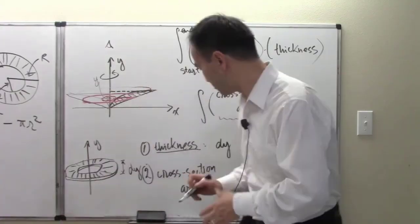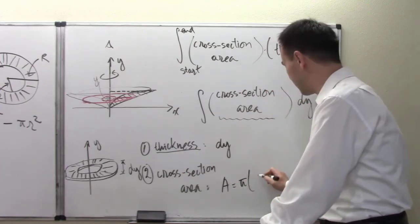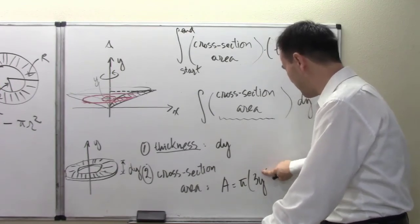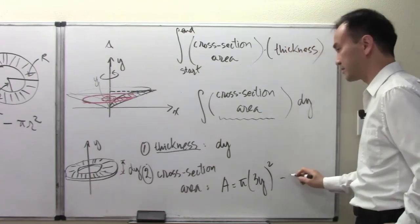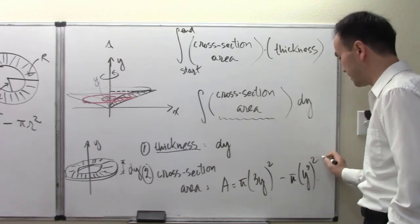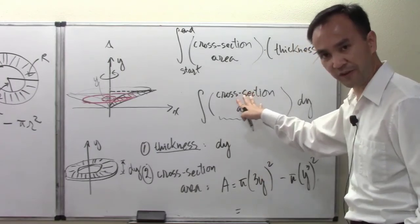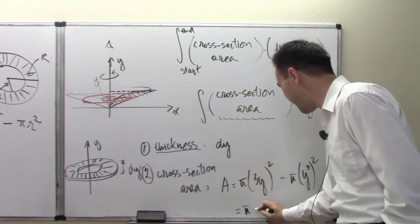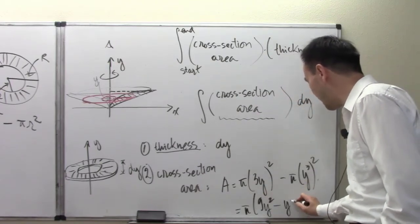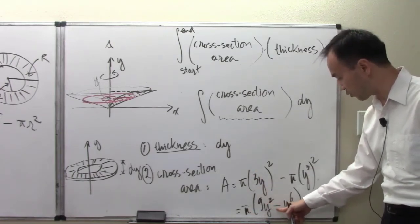So the area of any cross-section is π(3y)² minus π(y³)². Factoring out π, this simplifies to π(9y² - y⁶).